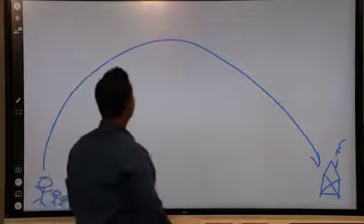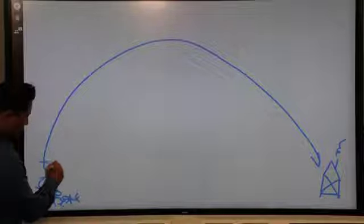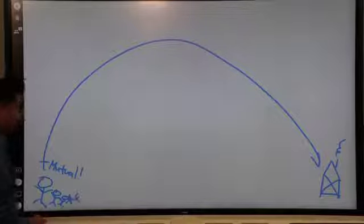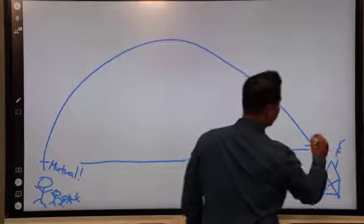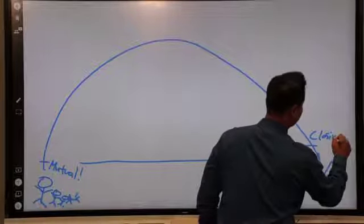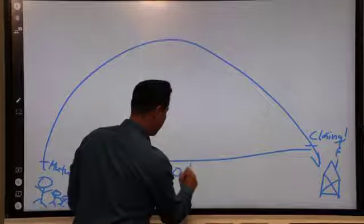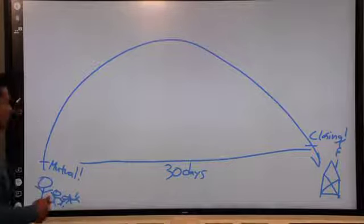Draw an arc, big arc, like that. And just remember that from the first mark, which is mutual acceptance from here to closing, takes about 30 days. It could be longer, it could be shorter. It takes about 30 days.